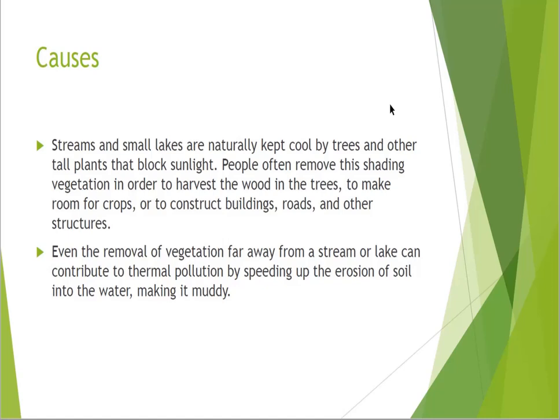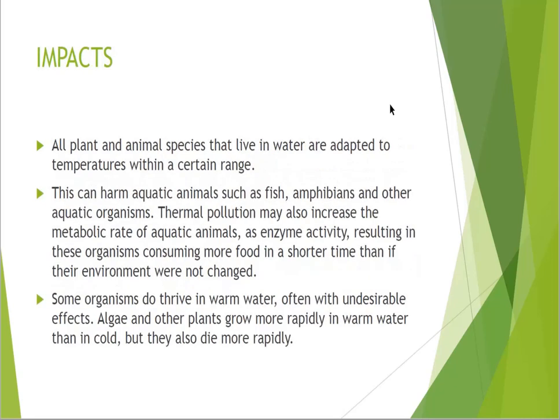Streams and small lakes are naturally kept cool by trees and other tall plants that block sunlight. People often remove shading vegetation to harvest wood, make room for crops, and construct buildings, roads, and other structures. Even the removal of vegetation far away from a stream or lake can contribute to thermal pollution by speeding up soil erosion into water and making it muddy. All plant and animal species that live in water are adapted to temperatures within a certain range — just like us, we cannot survive in very high or very low temperatures without appropriate clothing or shelter.